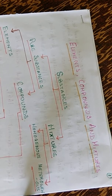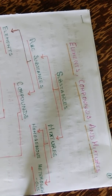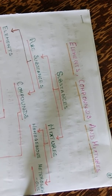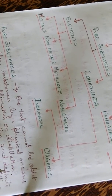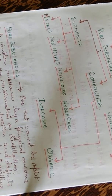Elements, compounds and mixtures are all substances. These substances are divided into two parts: pure substances and mixtures. Pure substances are of two types — elements and compounds. Mixtures can be homogeneous or heterogeneous. Elements can be of four types: metals, non-metals, metalloids or noble gases. Compounds can be inorganic or organic compounds.